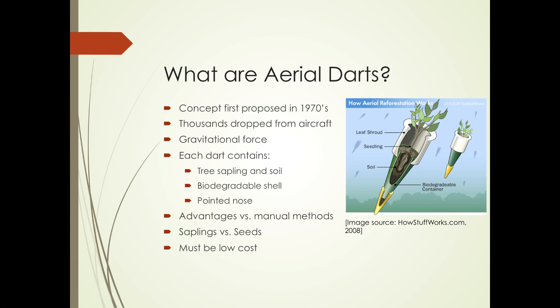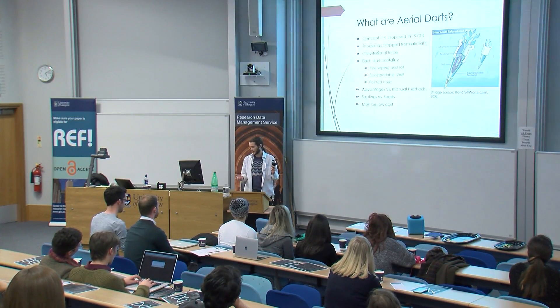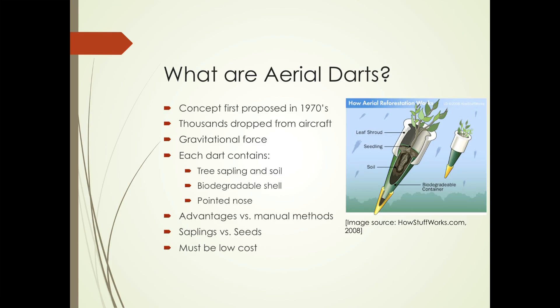I've got an example of one of these darts here — this was used in my wind tunnel tests. As you can see, each dart will have a tree sapling, basically just a young tree surrounded by some nutritious soil. It's got a pointed nose, so when it's dropped from the aircraft, the gravitational force will drive it into the ground and plant it. The shell surrounding the soil is made out of biodegradable material so that once it's in the ground, it will degrade away.